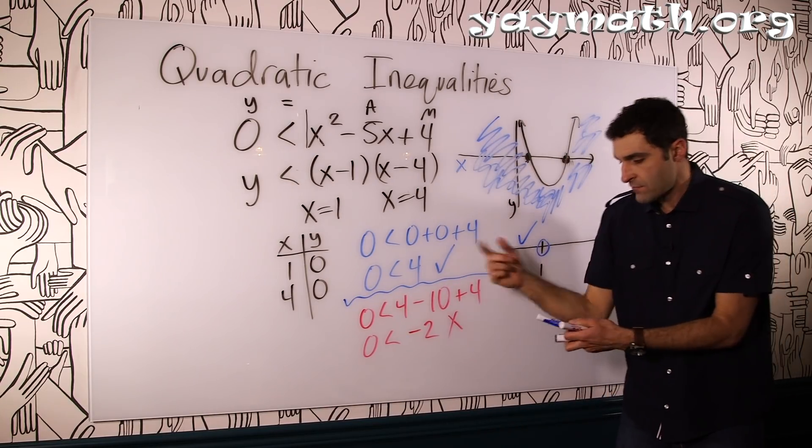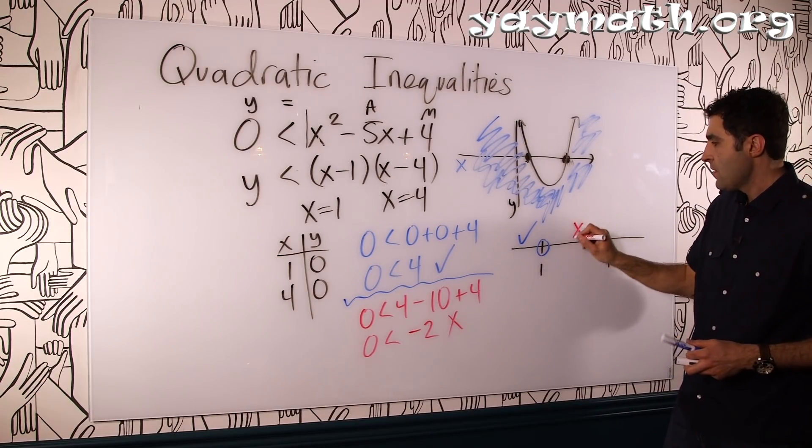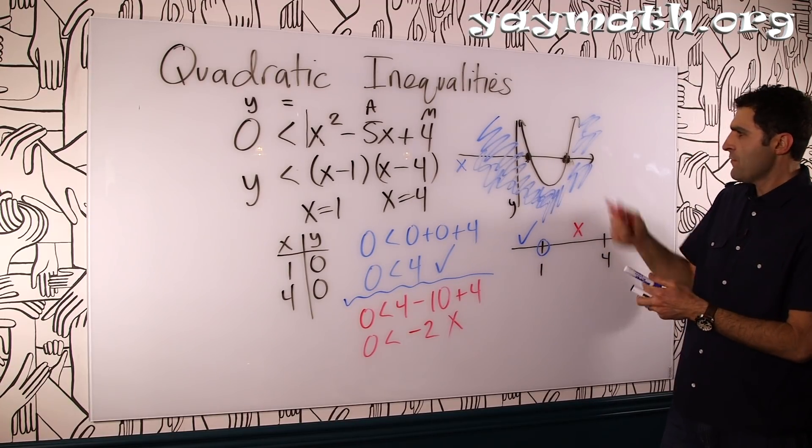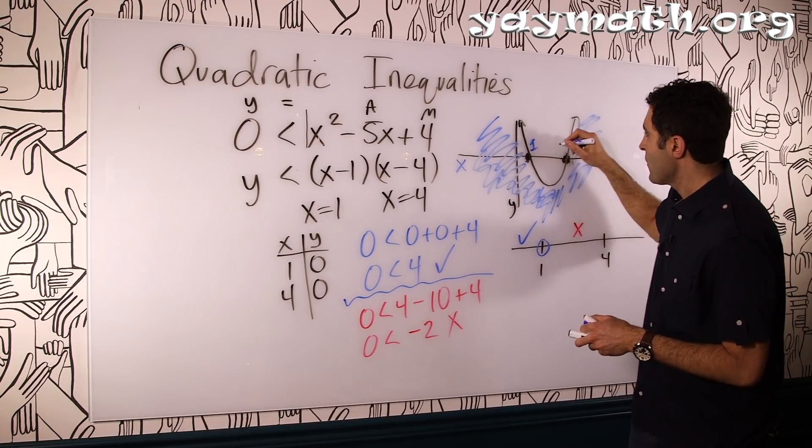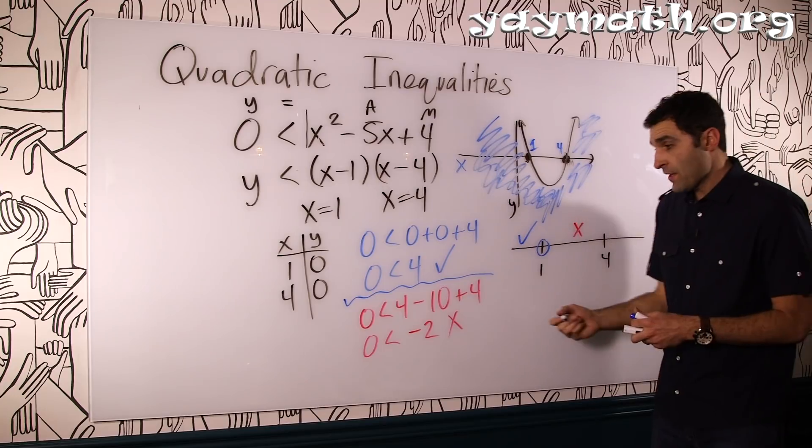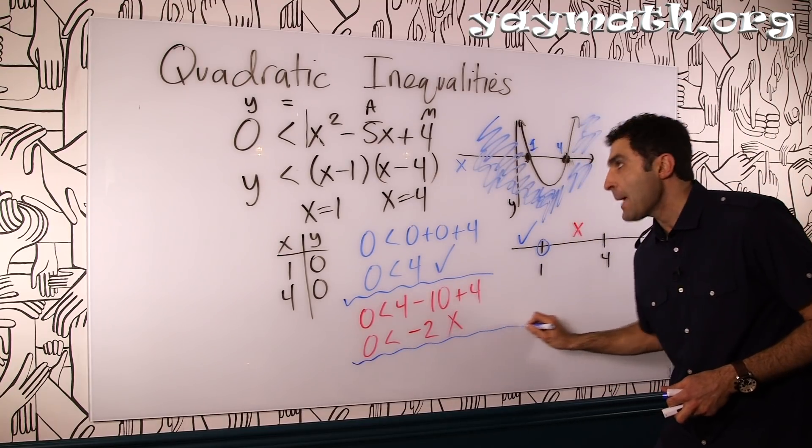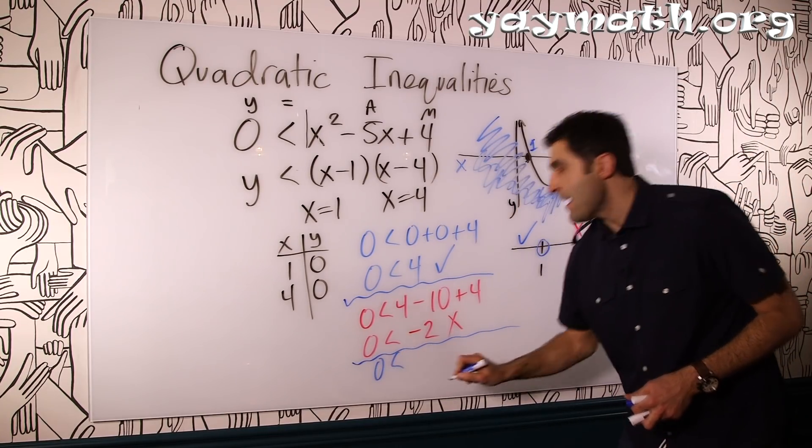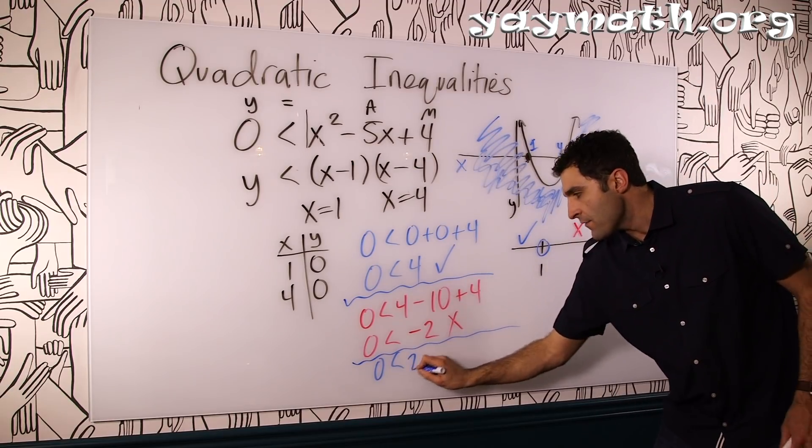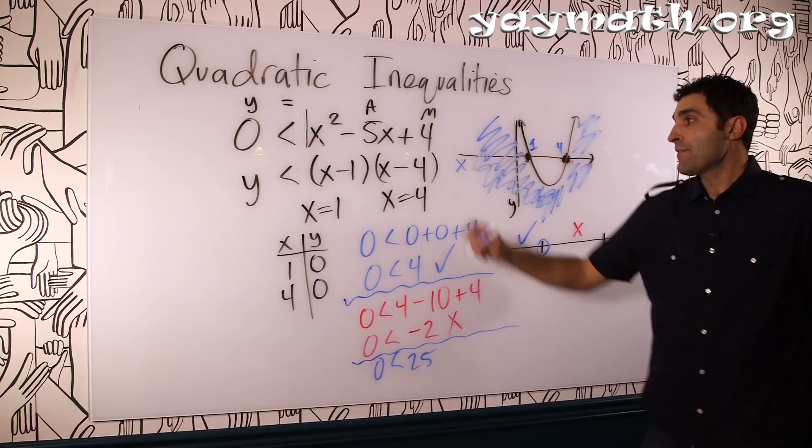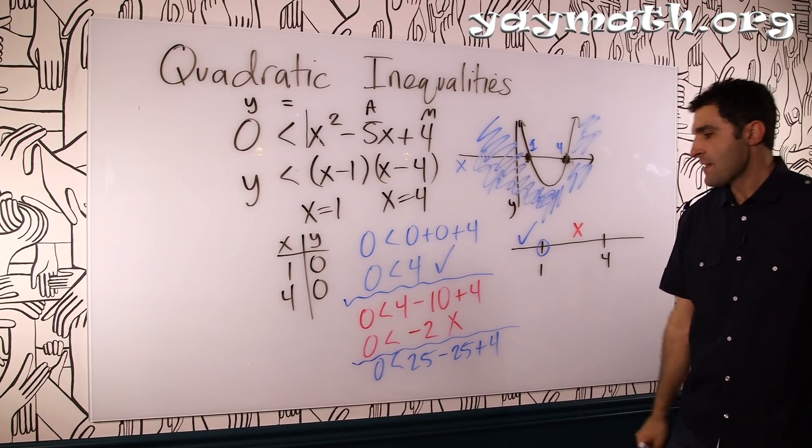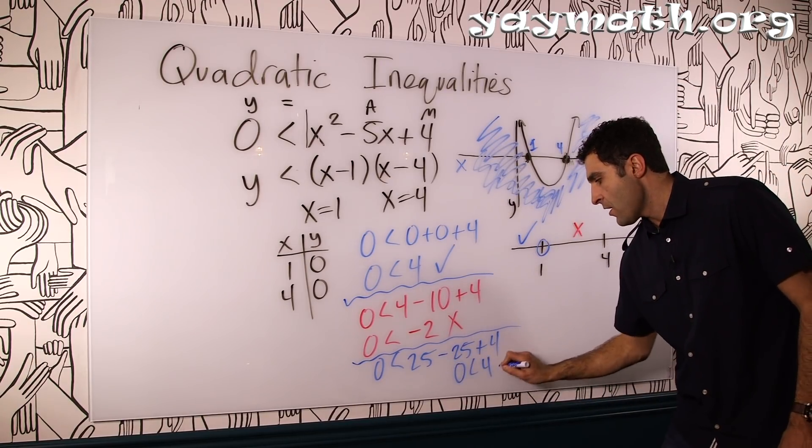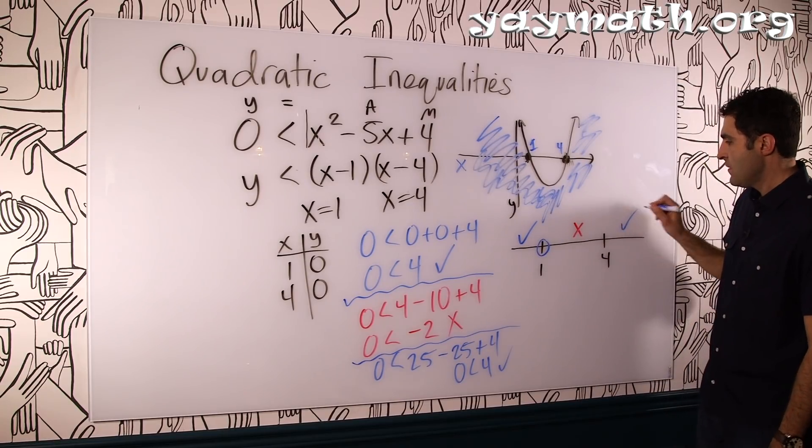Had it been that, you could include 1. 1 would be okay. But now since it's not 1 is not okay. We don't include the border value. Then we plugged in, what did we plug in? 2. 2 didn't work. And then for good measure, let's plug in 5 and make sure it does work. Put these in here. 1 and 4. Let's plug in 5. 0 less than 5 squared. 25 minus 5 times. Whoa, how about that? Minus 25 plus 4. And again, we get the same value. 0 is less than 4. We are good.